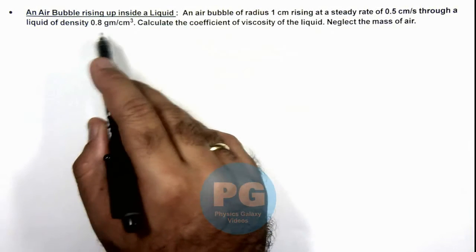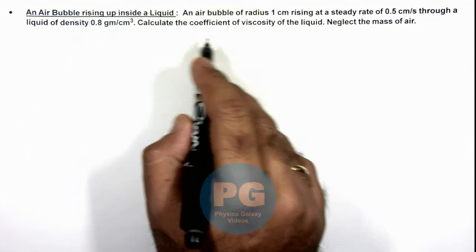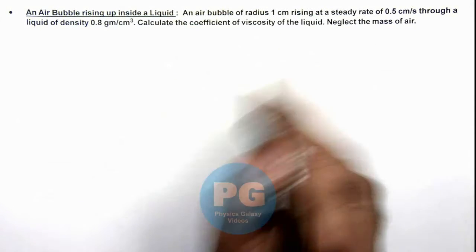Through a liquid of density 0.8 grams per cubic centimeter. We are required to calculate the coefficient of viscosity of the liquid, and we can neglect the mass of air inside.